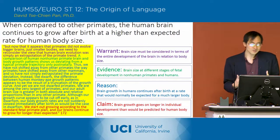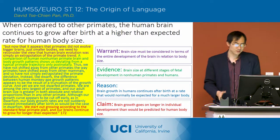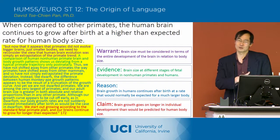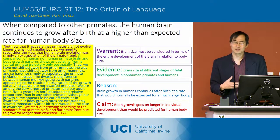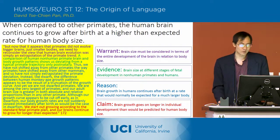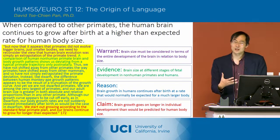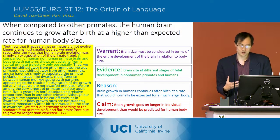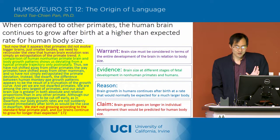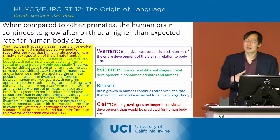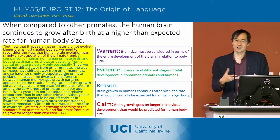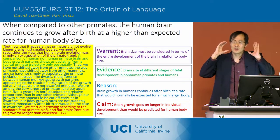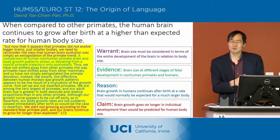Next, he talks about the ways in which the human brain is larger than non-human primate brains. In addition to having the primate advantage of a larger brain-to-body ratio from the beginning of embryonic development, the human brain continues to grow after birth at a higher-than-expected rate — even higher than expected for human body size. This prolonged growth particularly increases the prefrontal cortex, which becomes larger and larger through development in infancy and beyond.